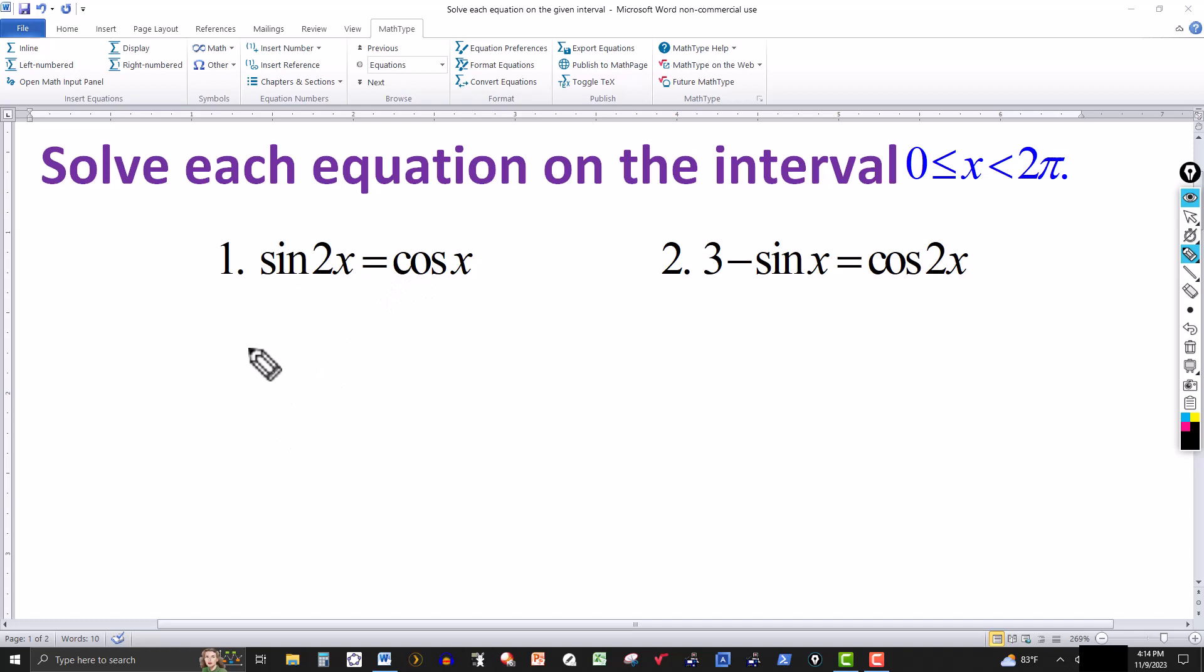For sin(2x), we can write that as 2sin(x)cos(x). That's using a trig identity. The sine of 2x equals 2sin(x)cos(x). I'm going to take the cosine over to the left side by adding the opposite to both sides. So this would be minus cos(x). And that's going to equal 0.